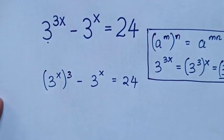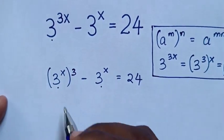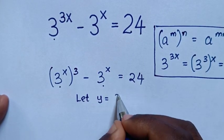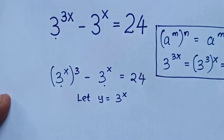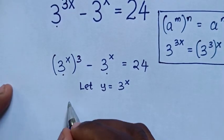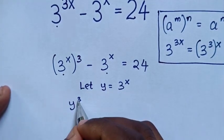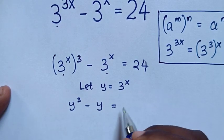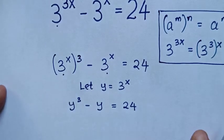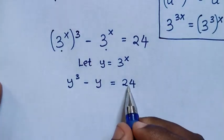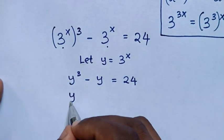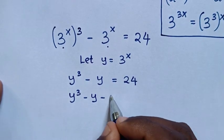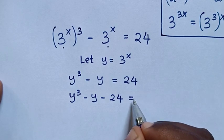Then in the next step, 3 power of x is common, so we let y is equal to 3 power of x. So in here it will be y power of 3 minus y is equal to 24. Then we take 24 to the left side, so it will be y power of 3 minus y minus 24 is equal to 0.